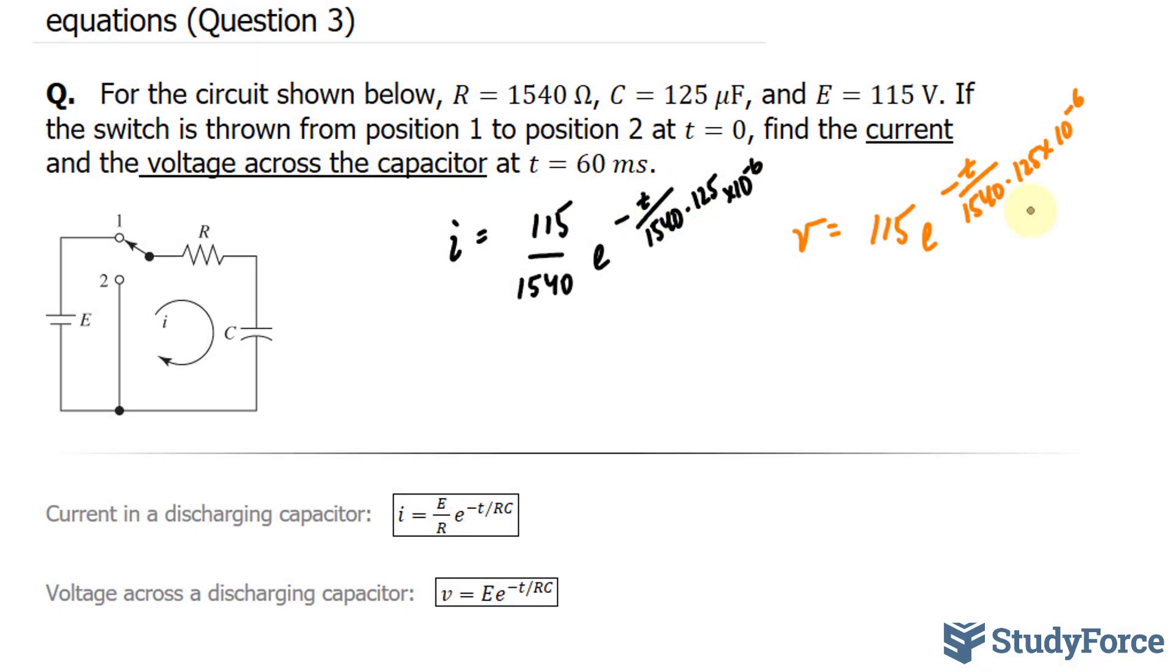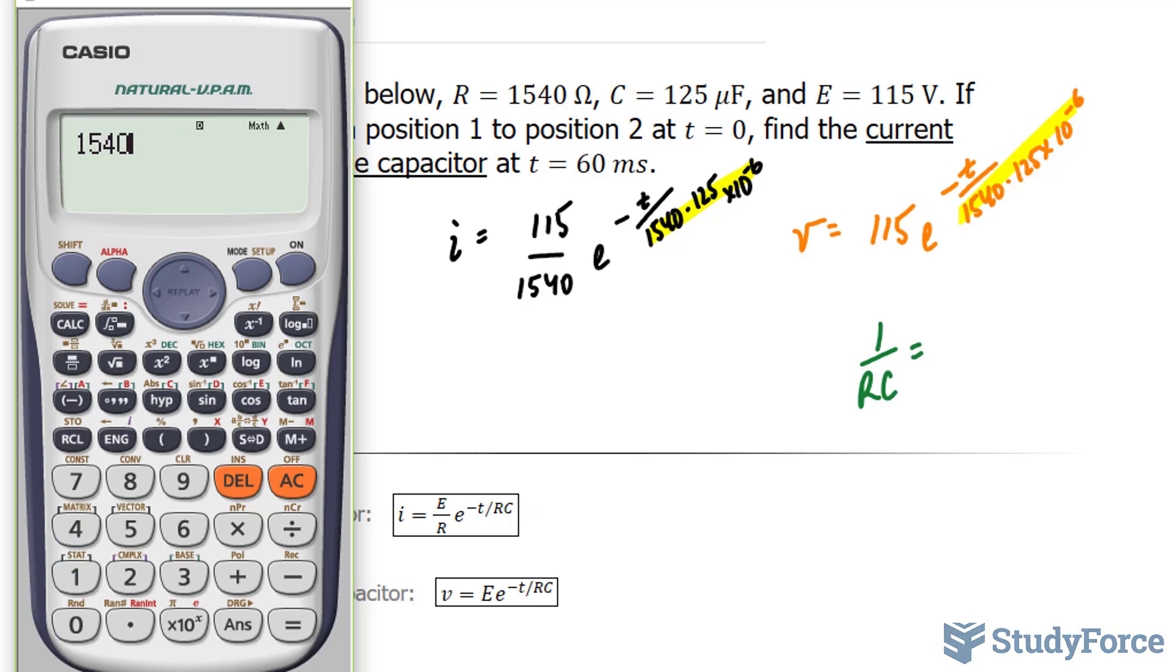Now that I've set up my equations, I can go ahead and find out what this is equal to. So technically, I'm finding what 1 over RC is equal to. Using my calculator, 1540 times 125 times 10 to the power of negative 6.